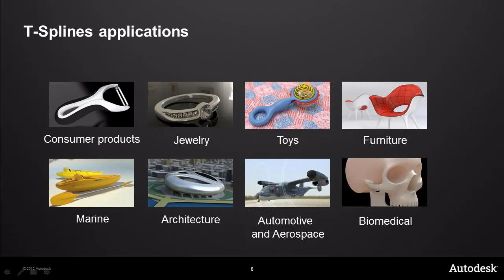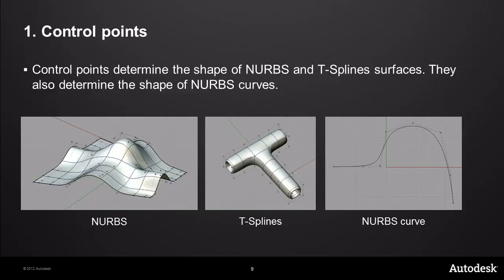With the T-splines implementation on the Rhino platform, it's been adopted across a whole host of different applications: consumer products, jewelry, toys, furniture — my personal favorite being automotive and aerospace. Really, anywhere where you would want to do high-quality surface modeling, you can use T-splines.